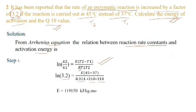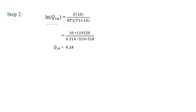Next we have to find out Q10 value. So ln(Q10) equals E×10/(R×T1×(T1+10)). So we can put the value like we know 10×E, we got 119150, divided by 8.314×310×318. So we will get the Q10 value 4.24. That's all for this video. We hope you enjoyed it.